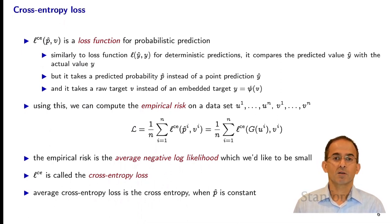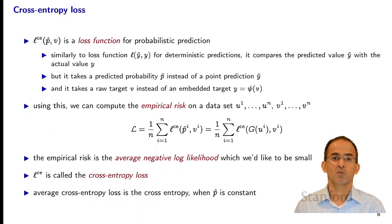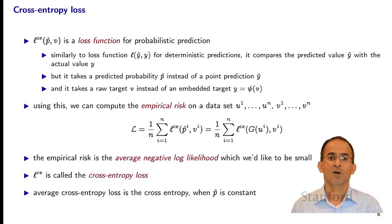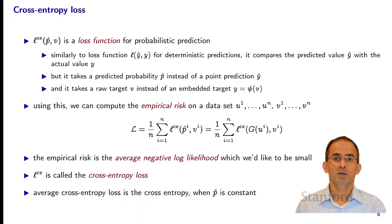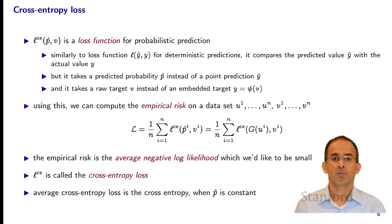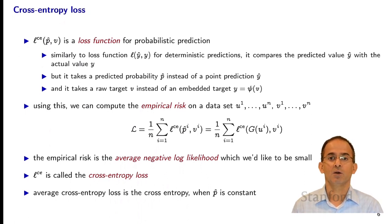We can compute the empirical risk on the entire dataset now that we have a loss function. We simply compute 1/n times the sum from i=1 to n of L_CE of p-hat i and v_i. P-hat i is the prediction at the i-th value of u, and v_i is the true value of the target variable in the i-th data point. P-hat i is itself generated by the predictor: it's g of u_i.